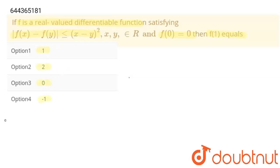So let's solve this. Here, I am going to divide both sides with |x - y|. So this will become |f(x) - f(y)|/|x - y| is less than or equal to